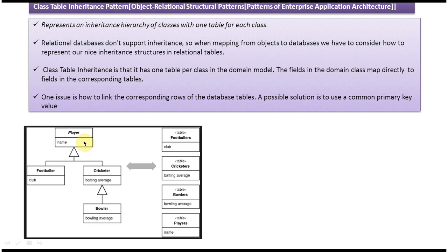You can see on the left side: Player is a superclass and it has a name attribute. Under that, two classes exist — Footballer and Cricketer — which are subclasses of Player. Footballer has a club attribute, and Cricketer has a batting average attribute. Under Cricketer, there is Bowler, which is a subclass of Cricketer and has a bowling average attribute.